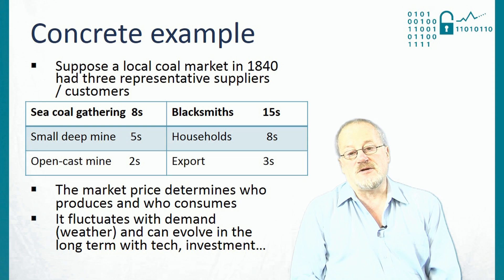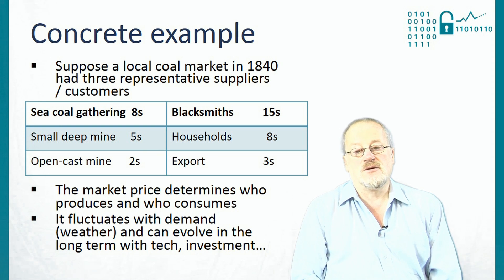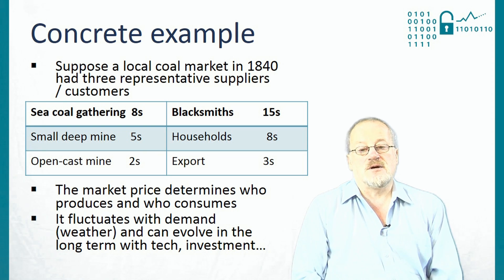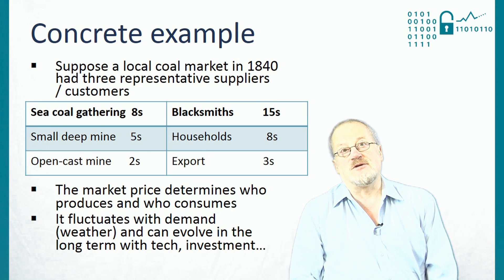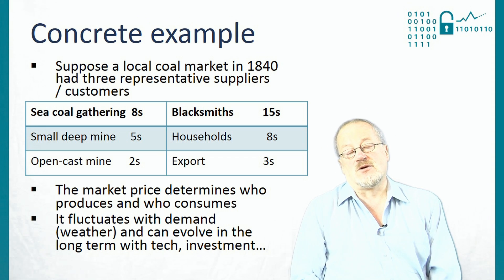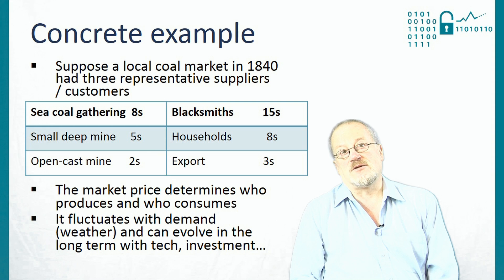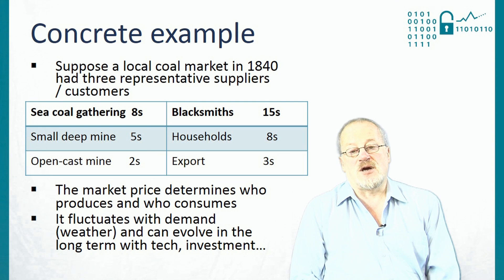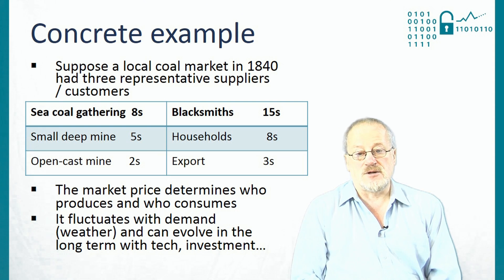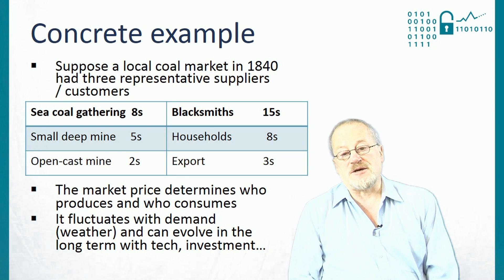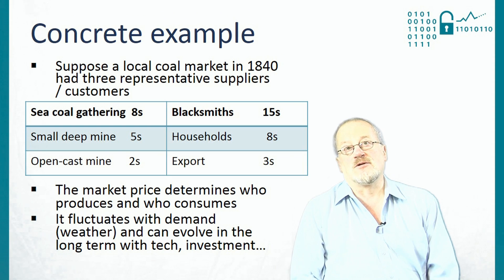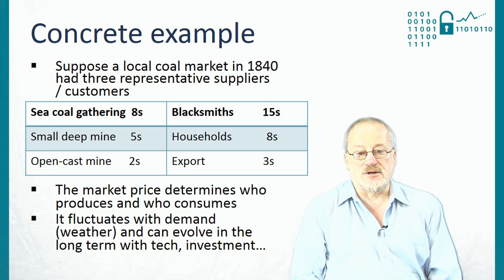You might have three customers for the coal. You might have merchants who would put it on boats and export it to London, and they'd only do that if they could buy it for three shillings a tonne or less. You'd have households who would use coal for heating in winter, but they might pay a maximum of eight shillings a tonne — if it were more than that, they might go out and gather wood. And then you'd have blacksmiths, who would be prepared to pay quite a lot for coal because without coal they couldn't run their forges and couldn't earn a living.